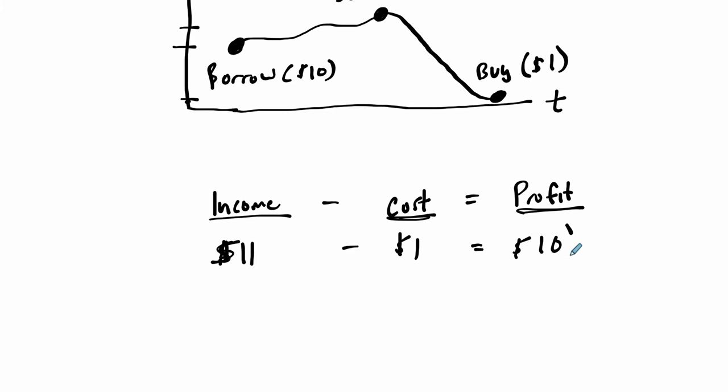Now, imagine if you scale it up by 1,000 shares. You borrow 1,000 shares. You sold them all at $11 and then bought them back at $1. $11 minus 1 is 10 times 1,000. That means you made $10,000 in profit. And that's all because the price fell.